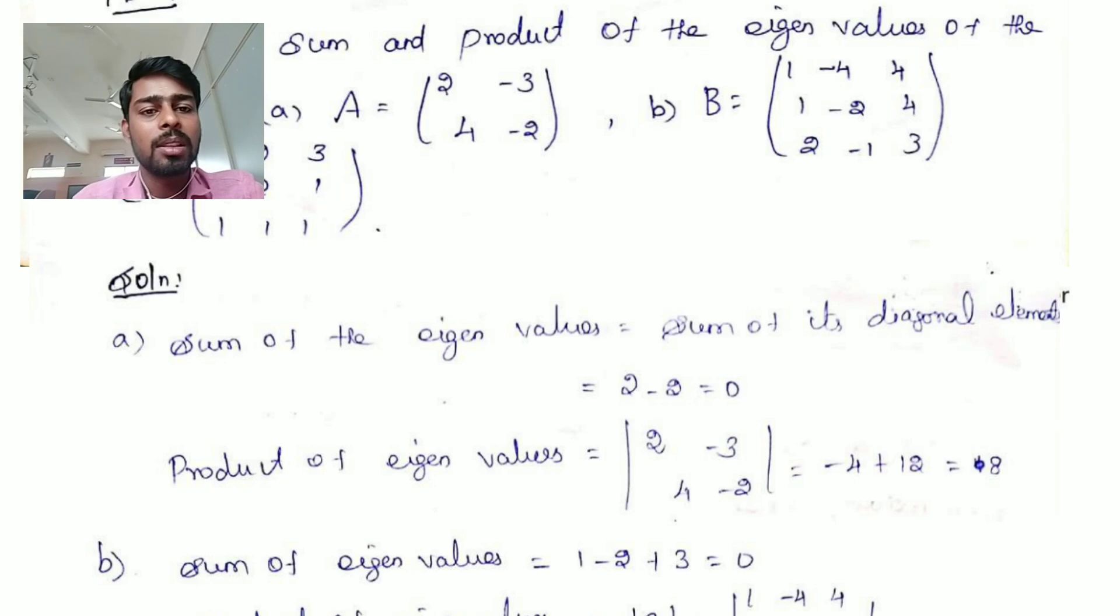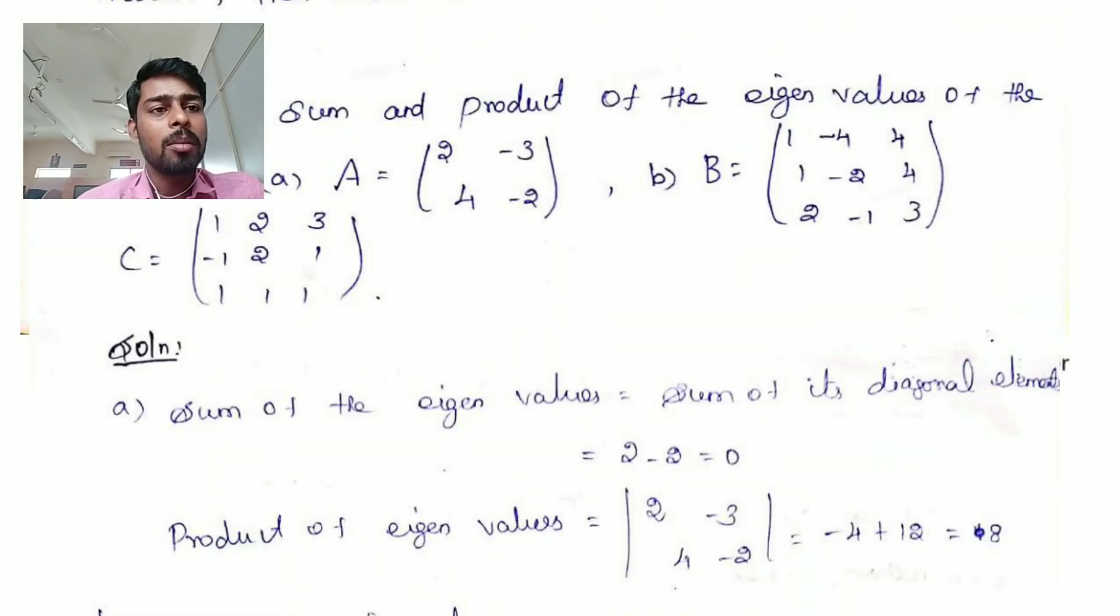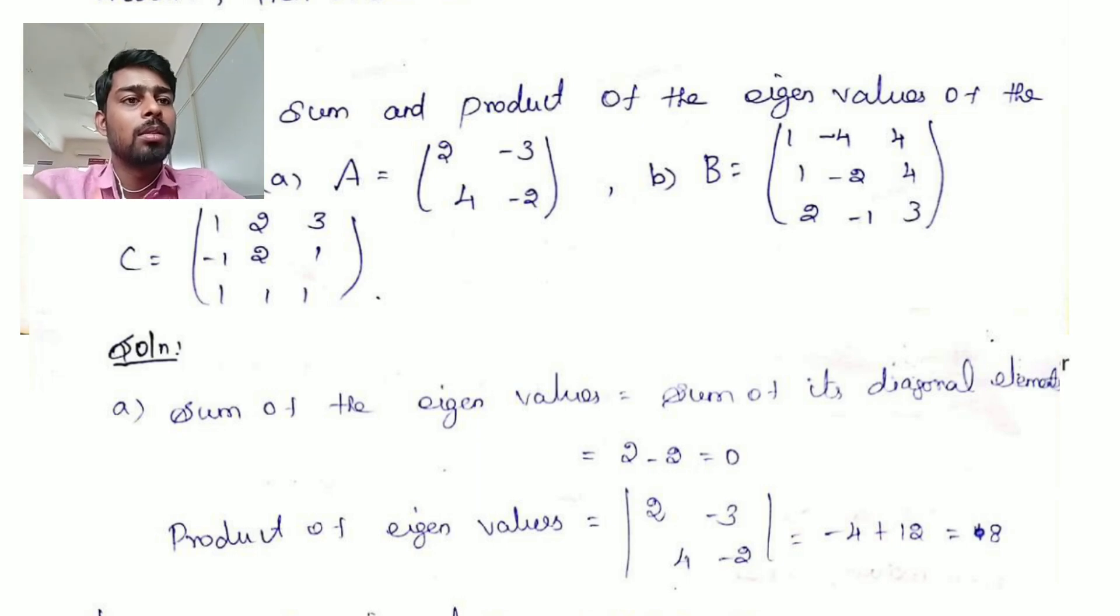So determinant of A is 8. So product of the eigenvalues is 8. Next, B equal to 3 by 3 matrix.